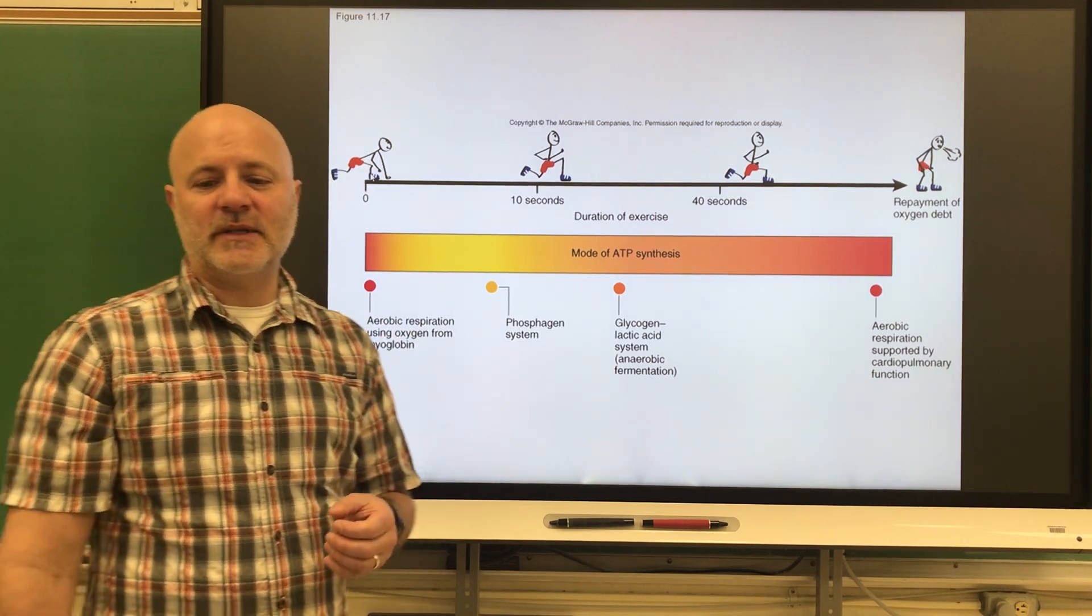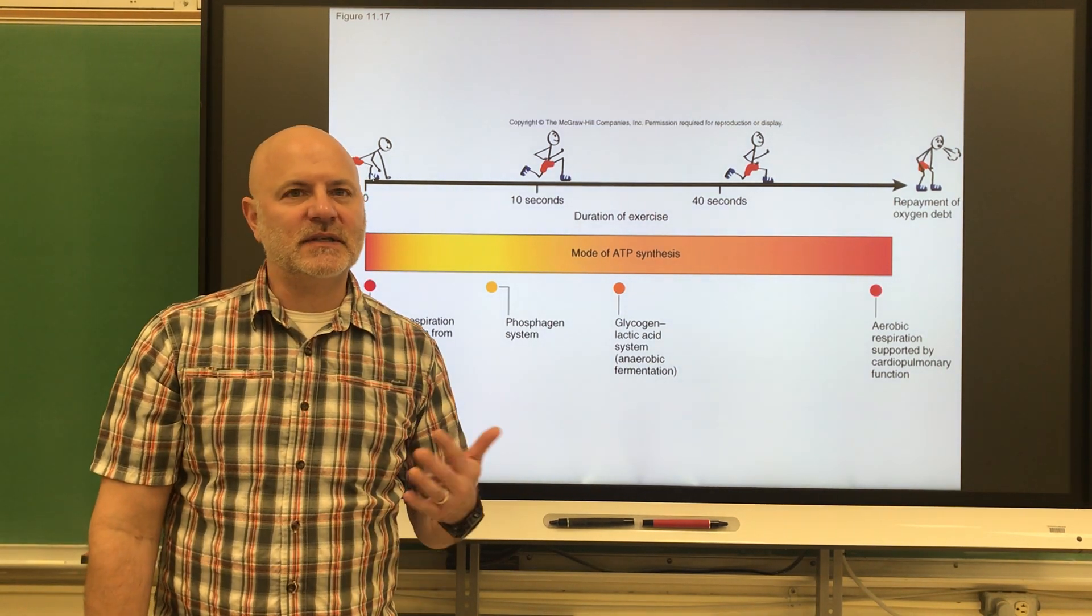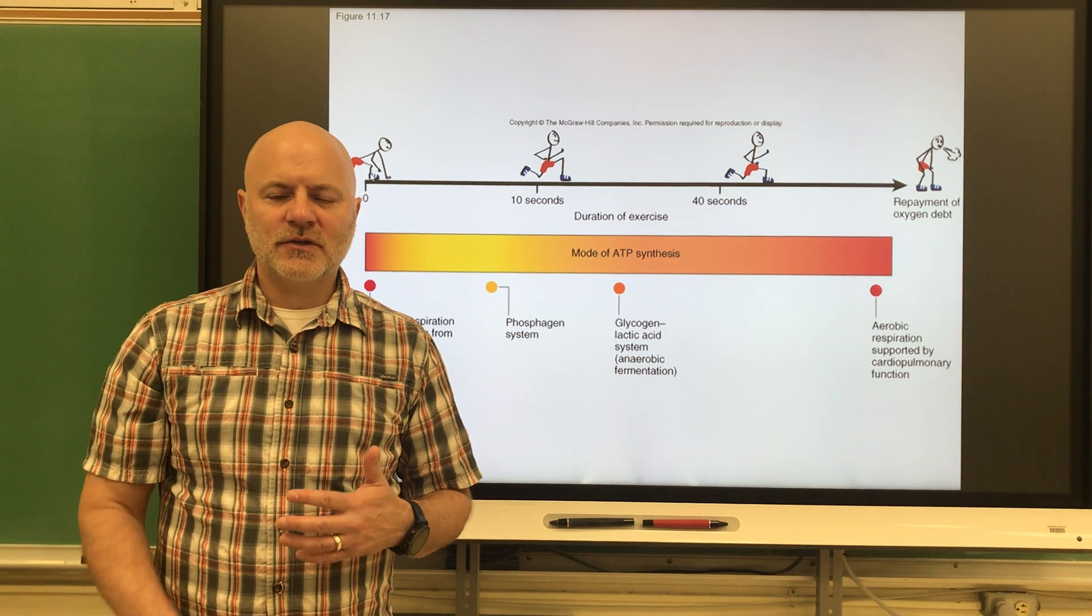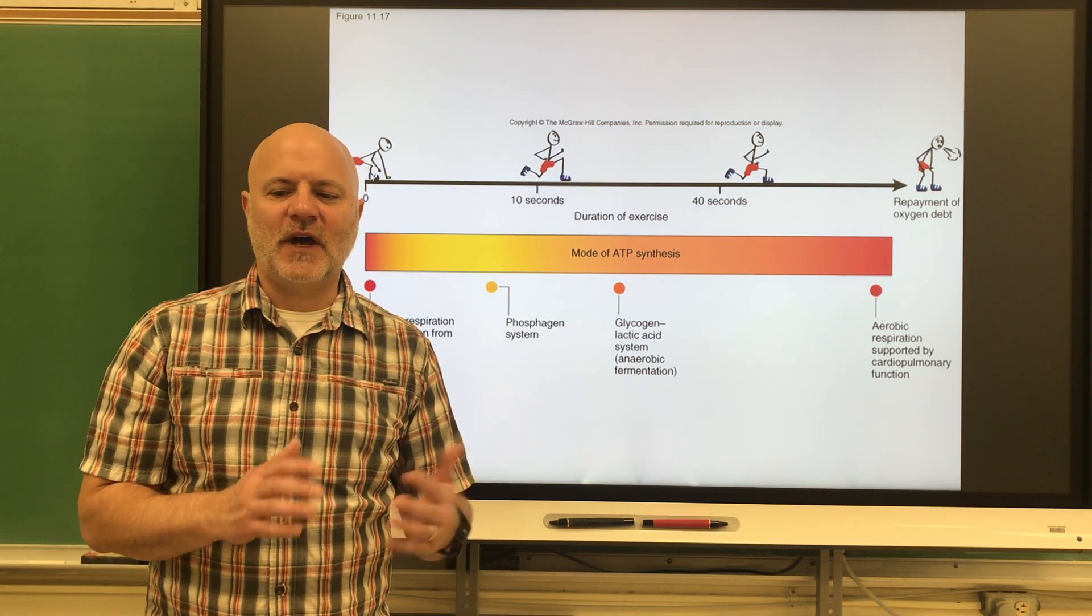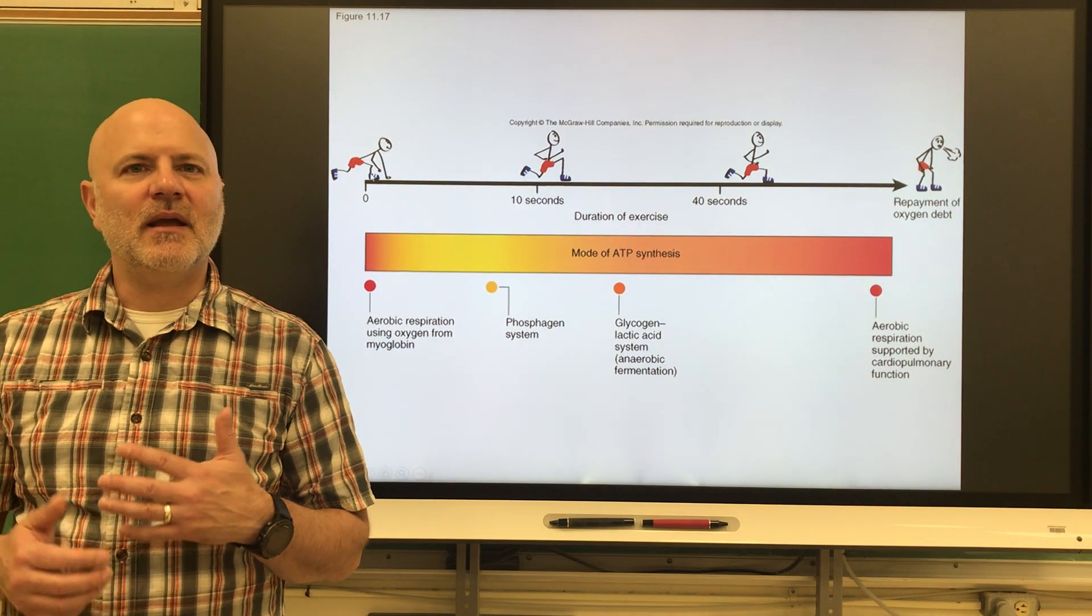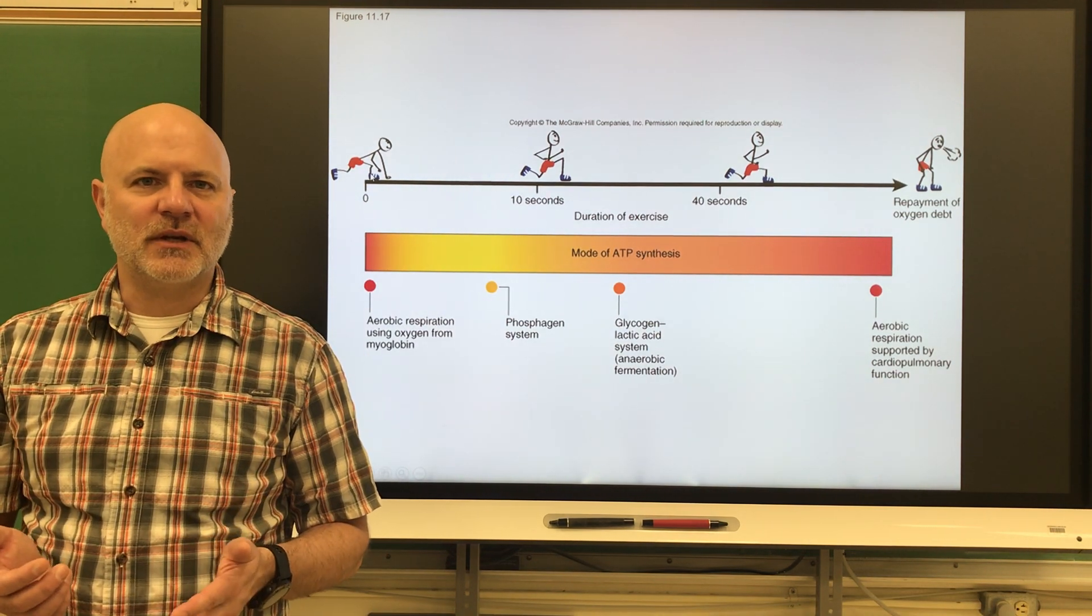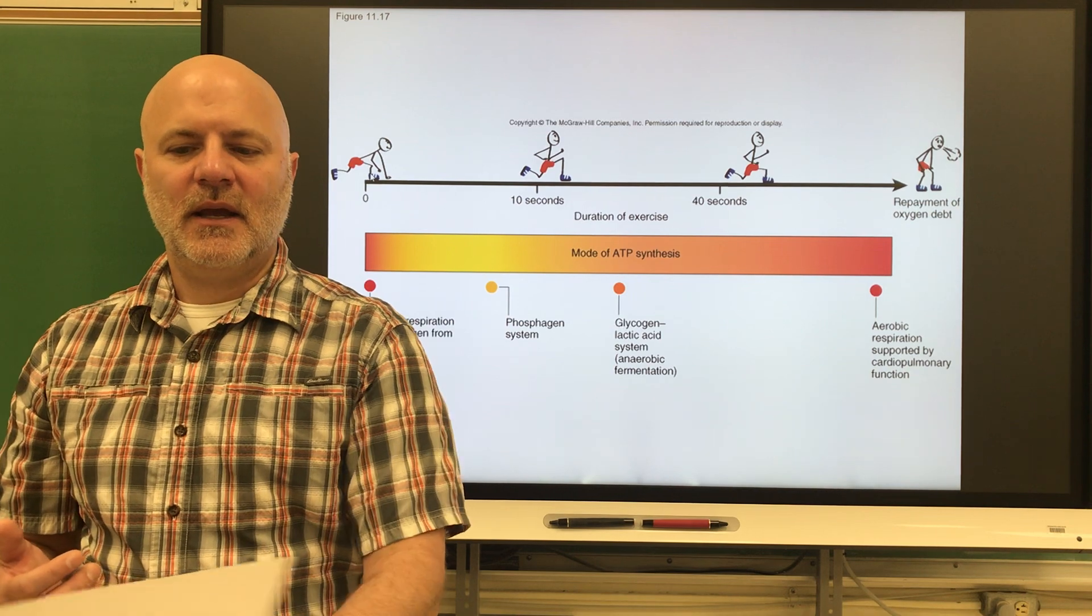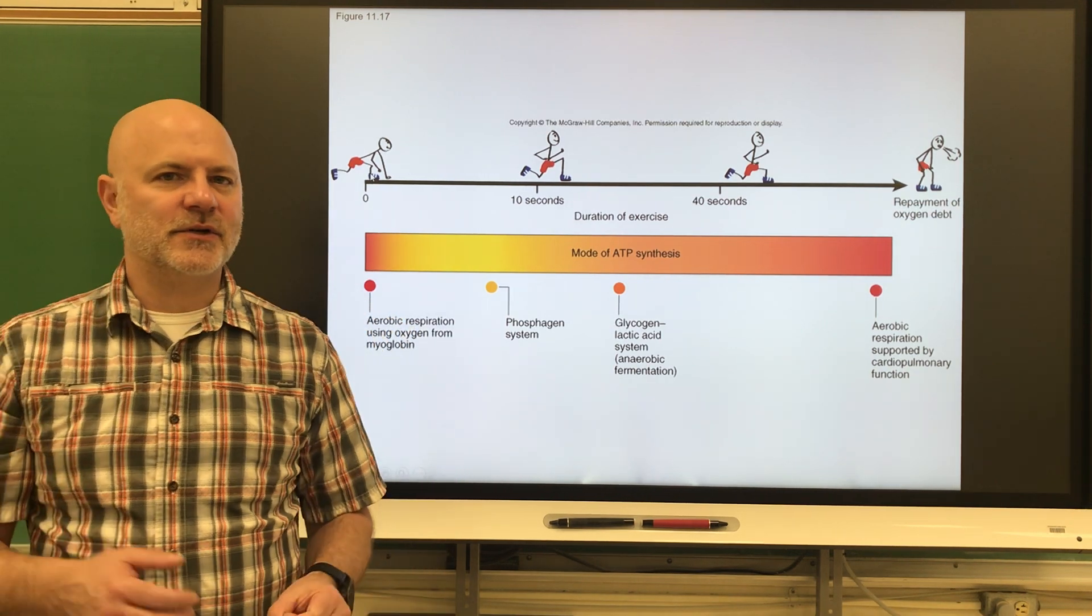Another consequence of muscle contractions is heat production. Only 40% of the energy that's found in glucose is converted into ATP in aerobic respiration. The rest of that energy is lost as heat, and that's what contributes to our body temperature.